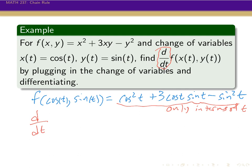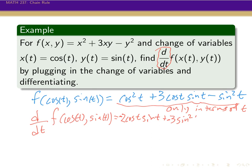When we take d/dt of this, we differentiate all the way through. The derivative of cos²(t) gives 2cos(t)·(−sin(t)). Then we use the product rule on 3cos(t)sin(t), giving 3(−sin²(t) + cos²(t)). And at the end, the derivative of −sin²(t) gives −2sin(t)cos(t). That's what we get just by plugging in and differentiating — it's really not a difficult problem.